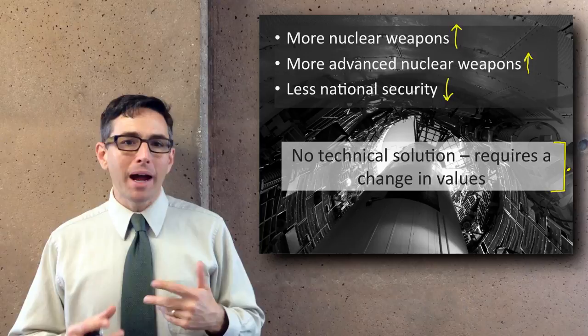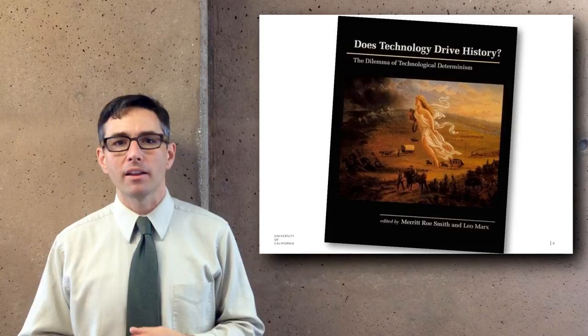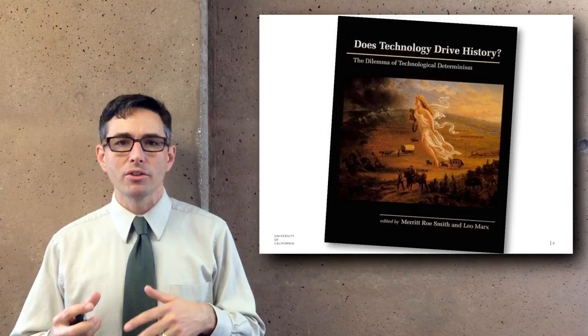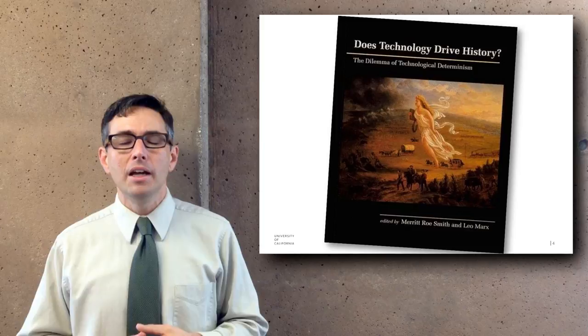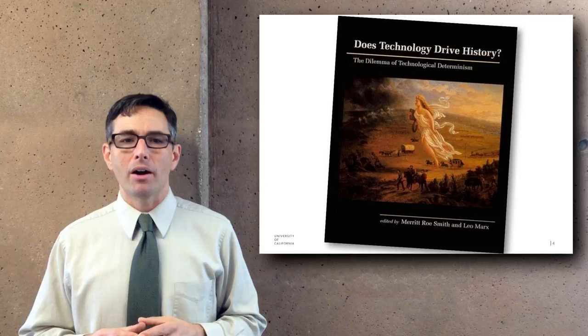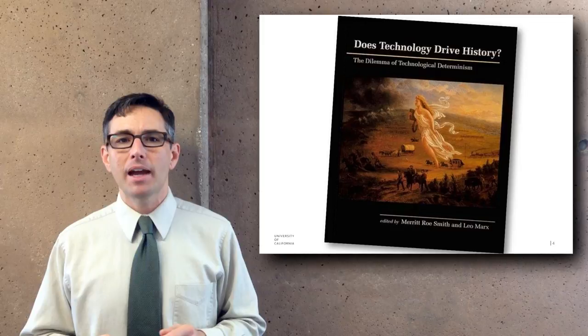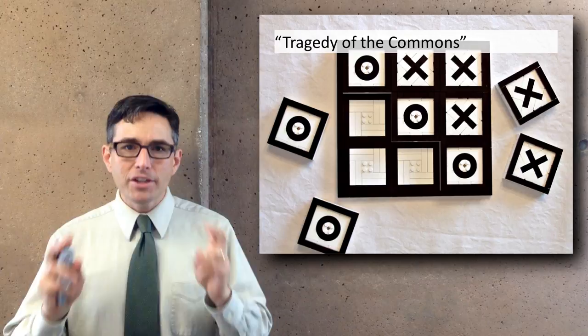Through this example, Hardin drew attention to the fact that this problem really doesn't have a technological solution. It required a change in human values or ideas of morality in order to stop the ever-growing increase in nuclear weapons. This reminds us of the narratives of technological determinism, where we're led to conclude that technological solutions are always welcome because they're new and appear to be better. But the nuclear arms case shows the bigger picture was not getting better.